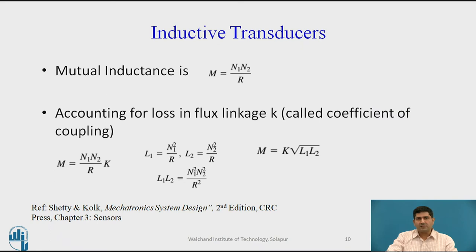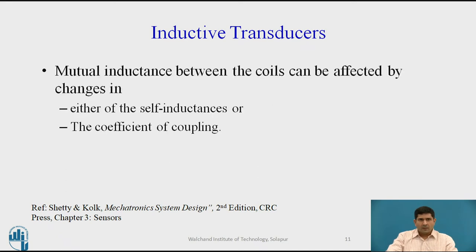Now if you account for flux linkages, coefficient of coupling, etc., the final formula for M works out to be M = K√(L1·L2). Mutual inductance of the coil can be affected by changing either the self-inductance or the coefficient of coupling. This is what the LVDT will try to exploit when measuring displacement.